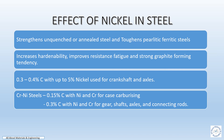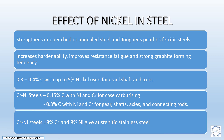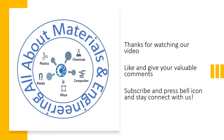0.3 to 0.4% carbon with up to 5% nickel is used for crankshafts and axles. Chromium-nickel steel of 0.15% carbon with nickel and chromium is used for case carburizing. 0.3% carbon with nickel and chromium is used for gears, shafts, axles, and connecting rods. 18% chromium and 0.8% nickel gives austenitic stainless steel.